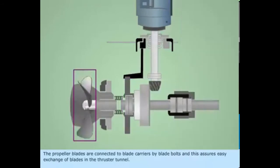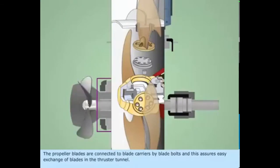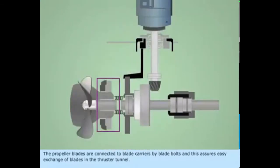The propeller blades are connected to blade carriers by blade bolts, and this assures easy exchange of blades in the thruster tunnel.